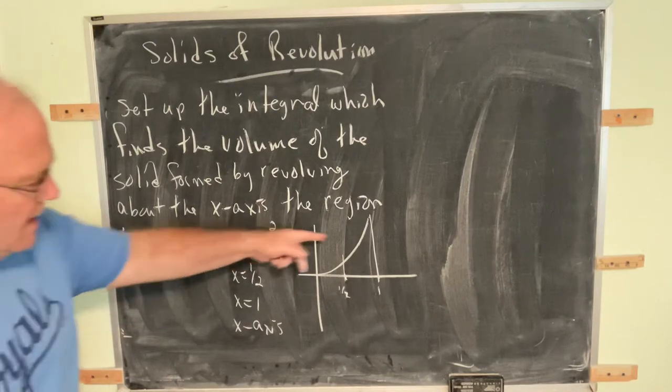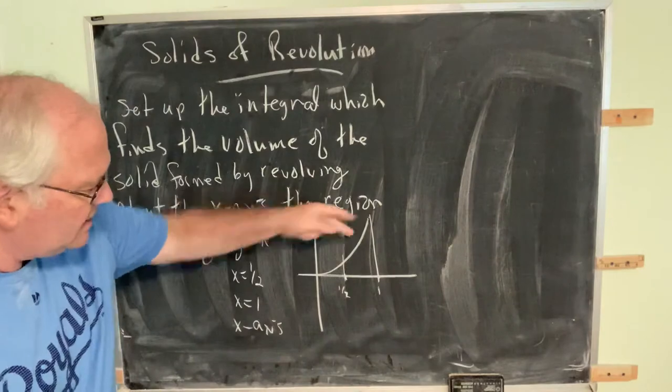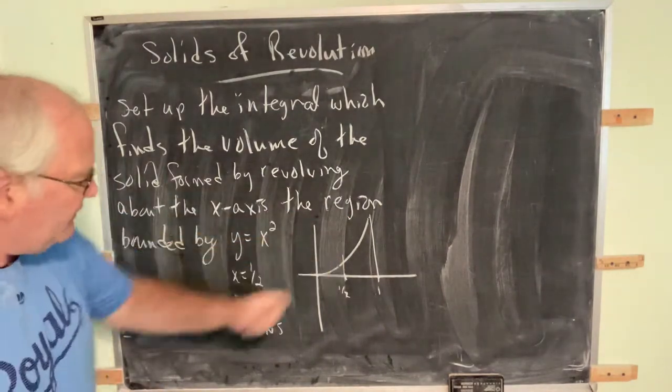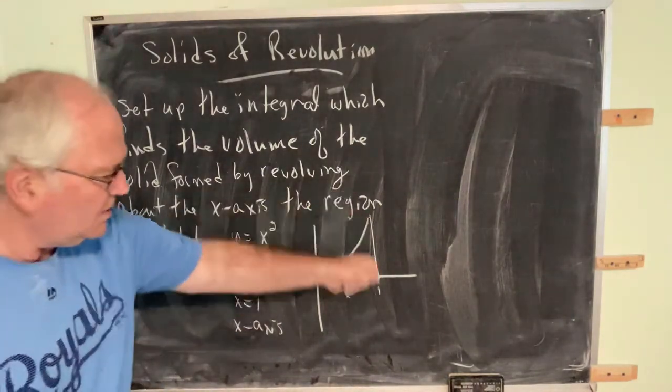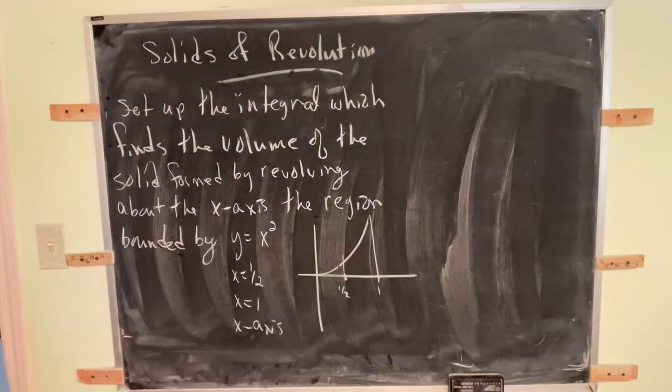We have y equals x squared, that's this parabola. We have x equals one-half is the left edge, x equals one is the right edge, and the bottom is the x-axis.